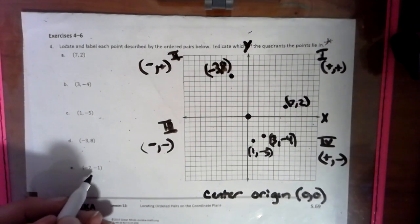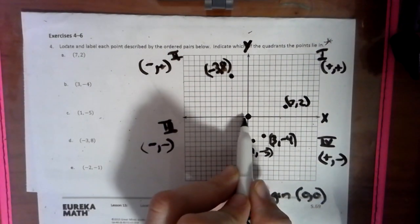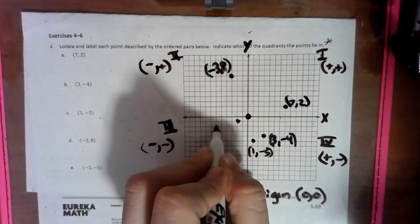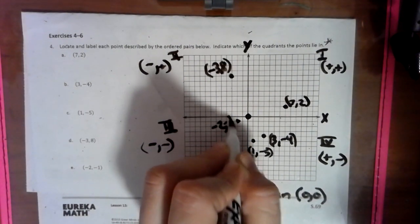And then we have negative 2, negative 1. So that means over to the negative 2 and down 1. And that would be negative 2, negative 1.